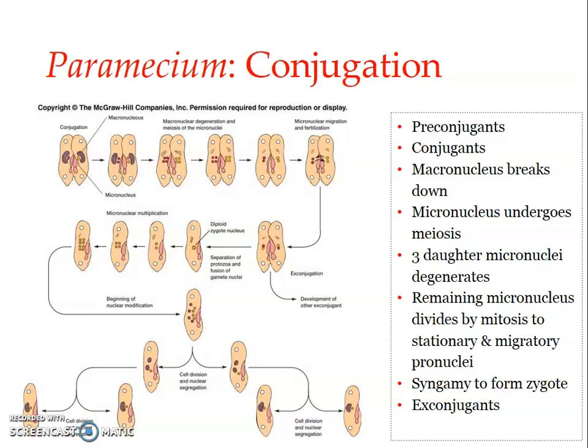These mating types are morphologically identical but show physiological differences. In the case of Paramecium caudatum, there are 16 syngens and each syngen has two mating types. Conjugation takes place between the two different mating types of the same syngen. It can never happen between two individuals belonging to the same mating type.